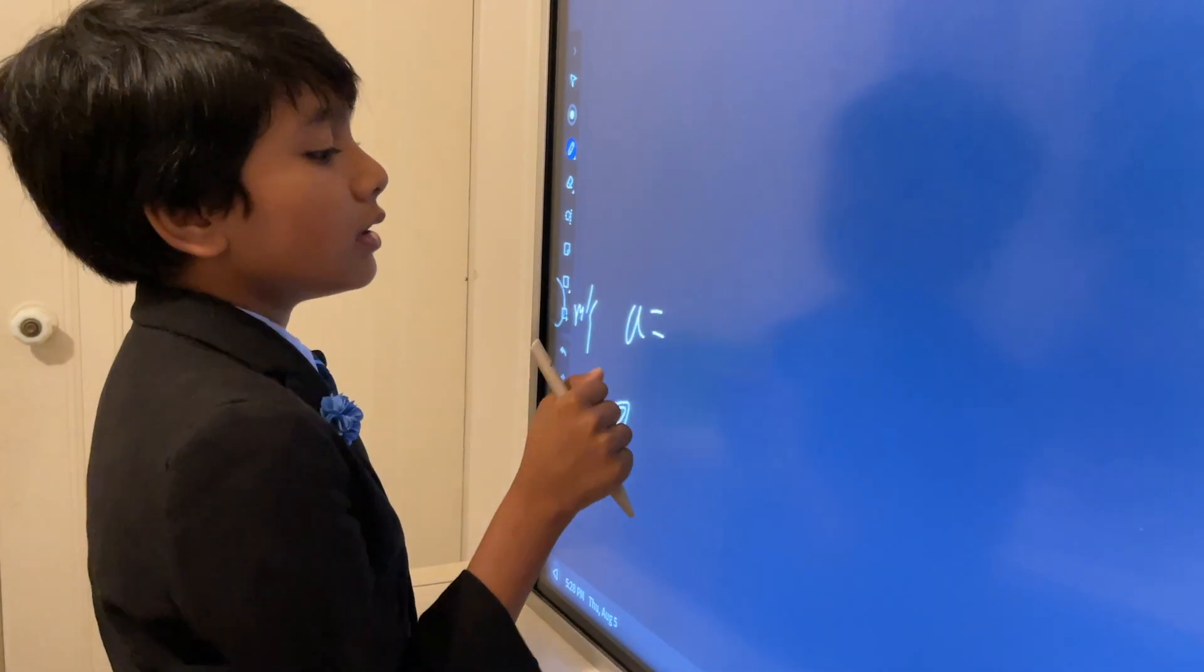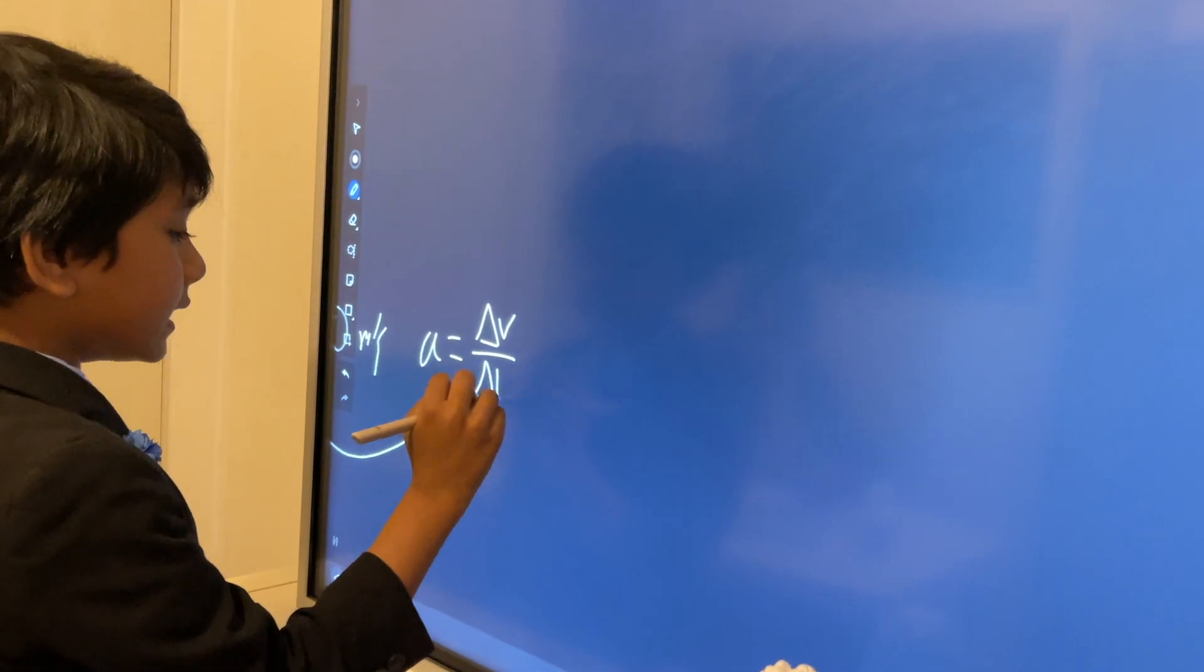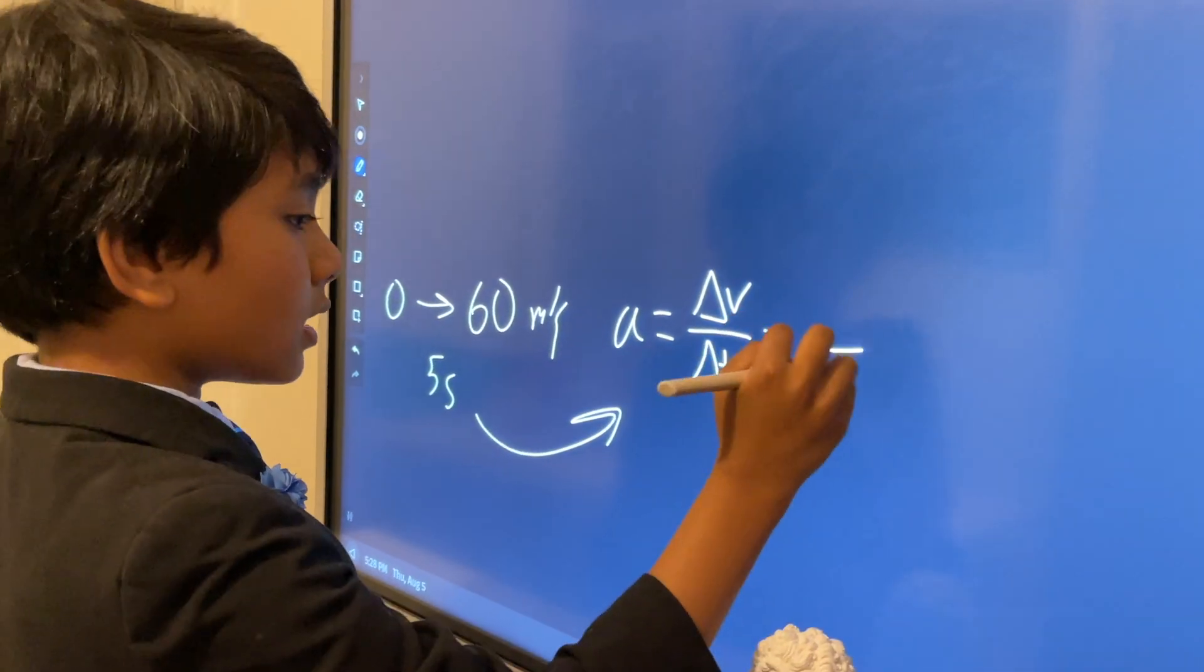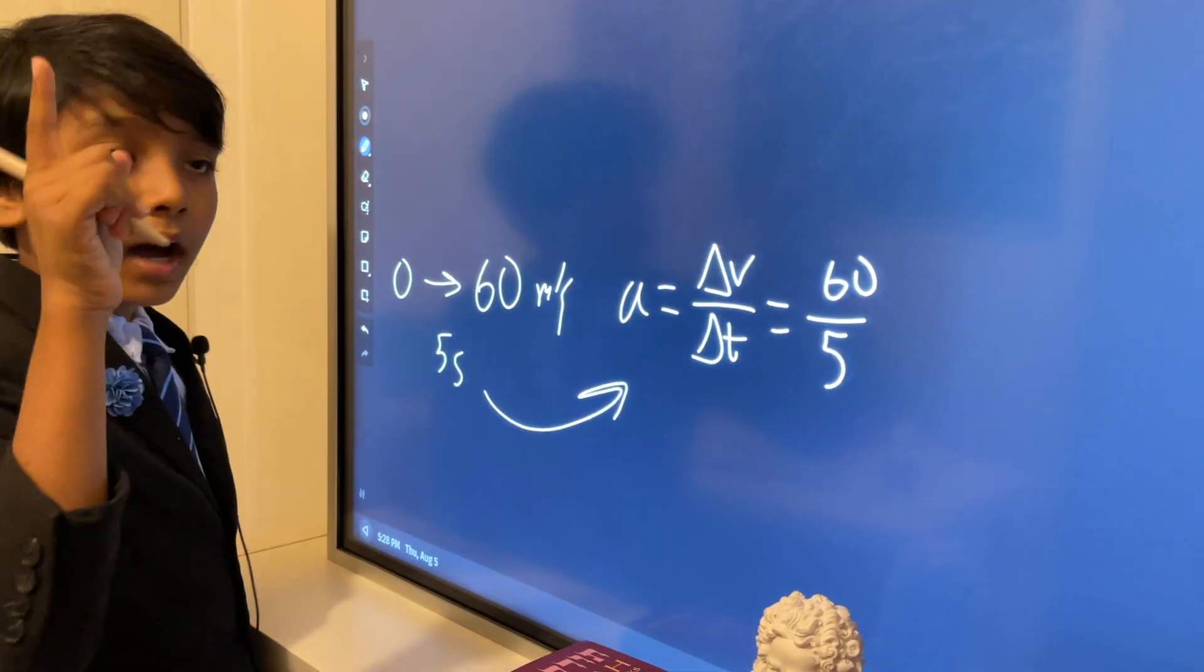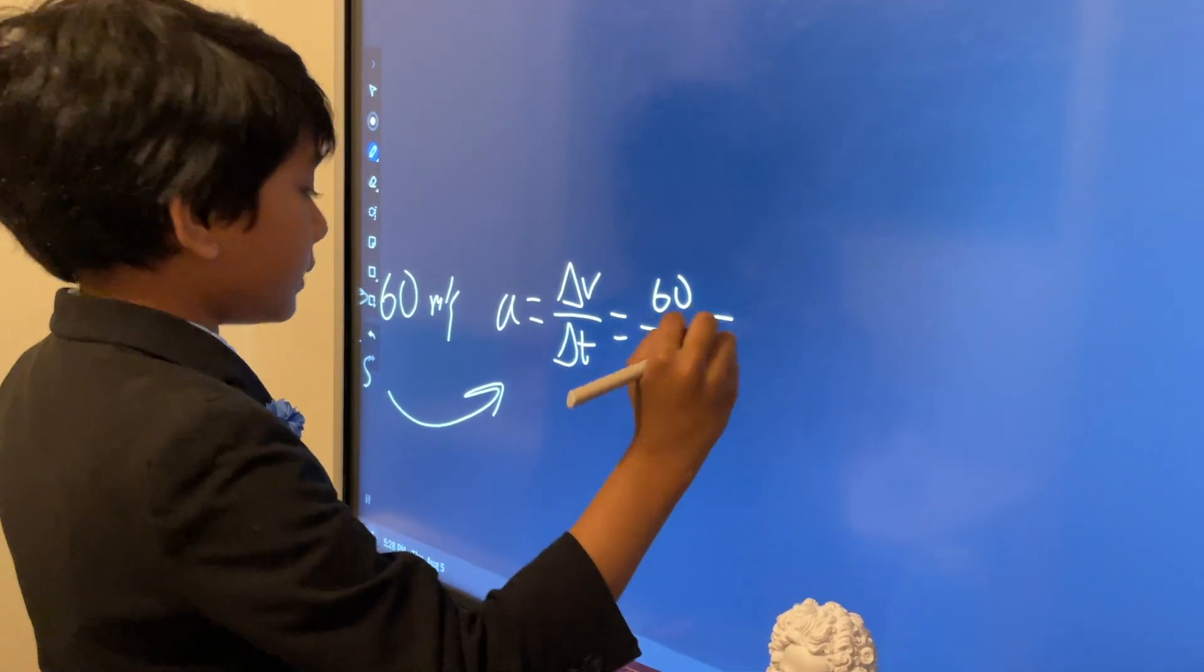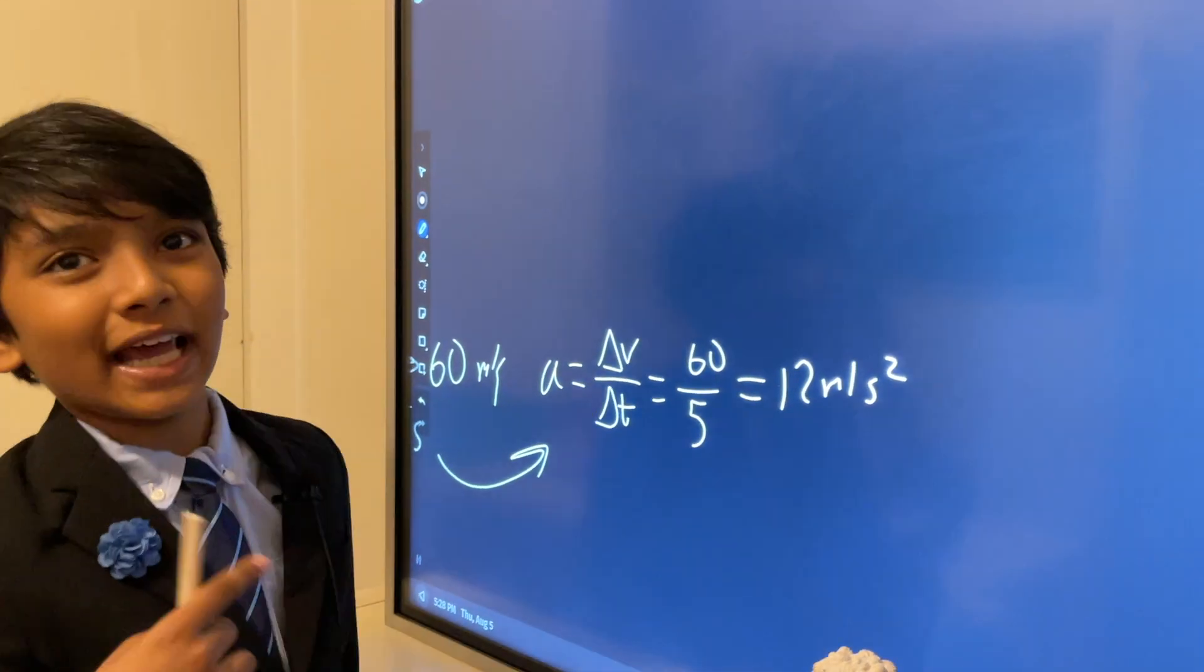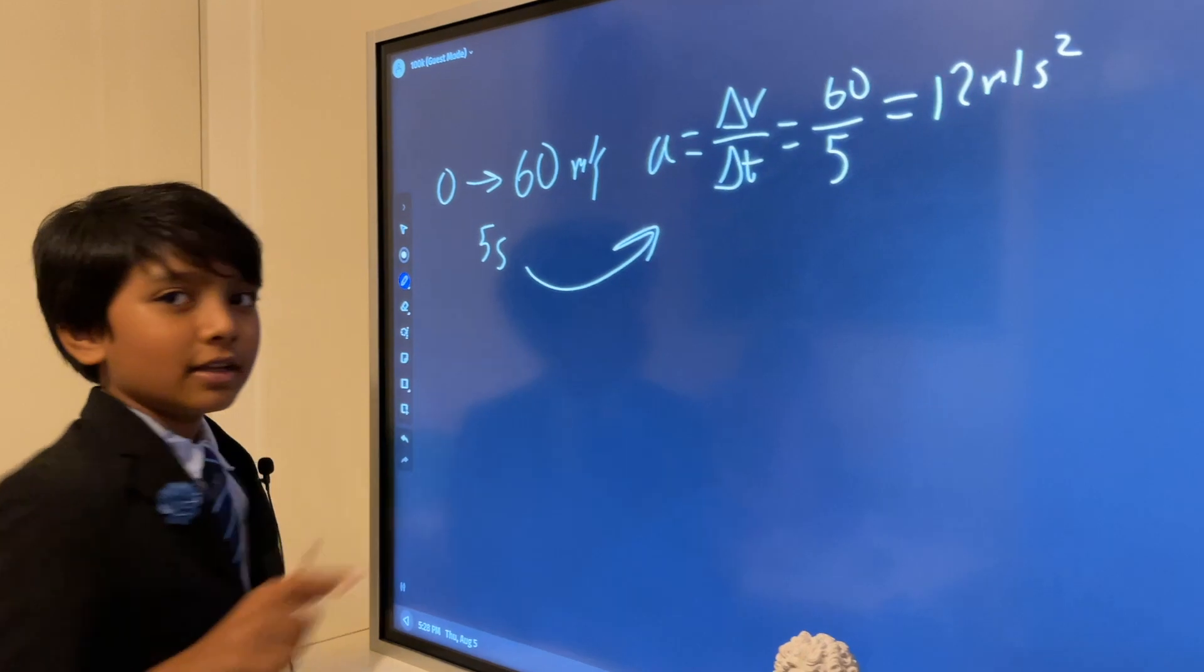And now let's get on with it. So a equals the change in v over the change in t. The change in time was five seconds, but the change in velocity went up by 60, so that would be 12 meters per second squared, because it's meter per second per second.